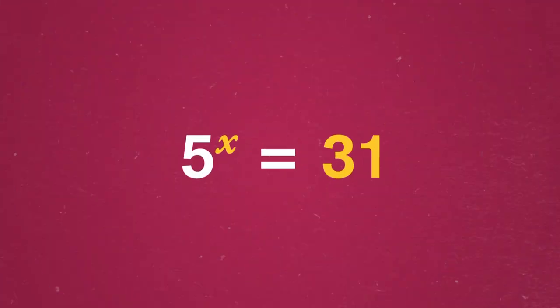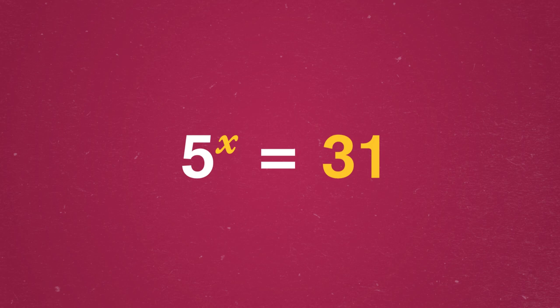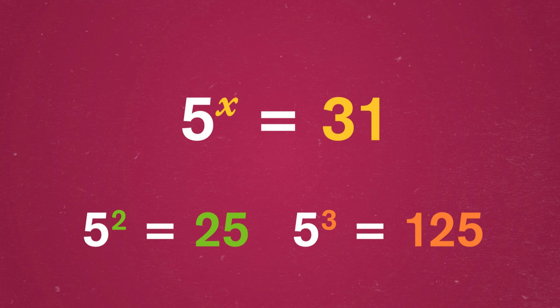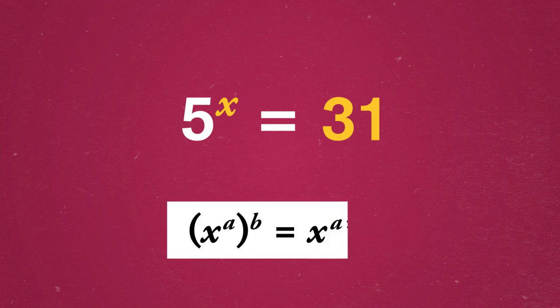But think about it. If we had something like 5 to the xth power equals 31, we wouldn't be able to solve that precisely without logarithms. Now, we might just guess that x is a little more than 2 but much less than 3 since 5 to the second power is 25 and 5 to the third power is 125.